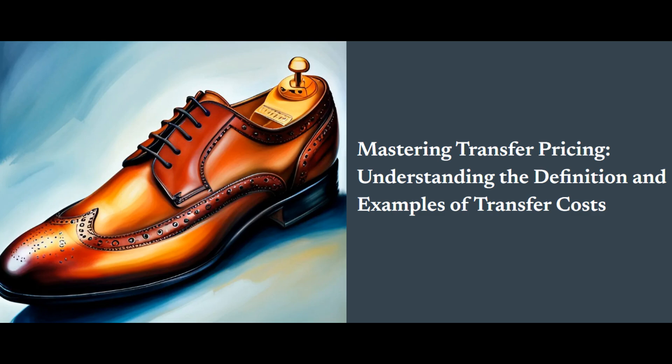There are several methods that companies can use to determine transfer prices. The cost plus method adds a markup to the production costs of a product. The comparable uncontrolled price method compares the controlled transaction to similar transactions between unrelated parties. The profit split method divides profits between entities based on their contributions to the transaction. Each method has its pros and cons, and the choice often depends on the specific circumstances of the transaction.